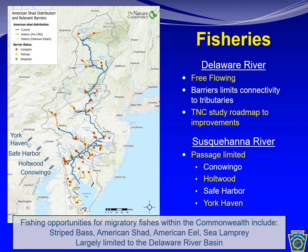Fishing opportunities within Pennsylvania include striped bass, American shad, American eel, and sea lampreys. Fishing for these species is largely limited to the Delaware River Basin where mainstem waters are free flowing. However, numerous barriers such as low head dams and culverts occur within the basin tributaries, inhibiting passage of migratory fishes to their historical ranges.